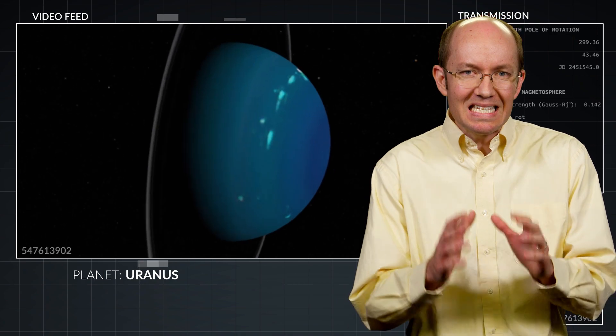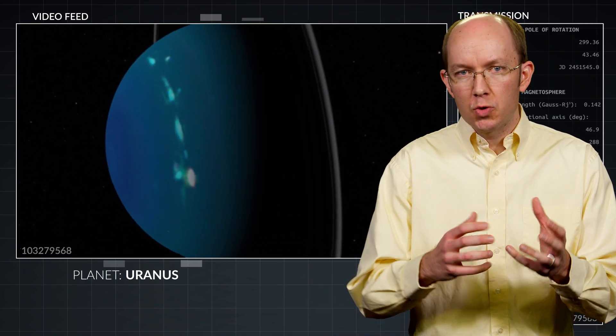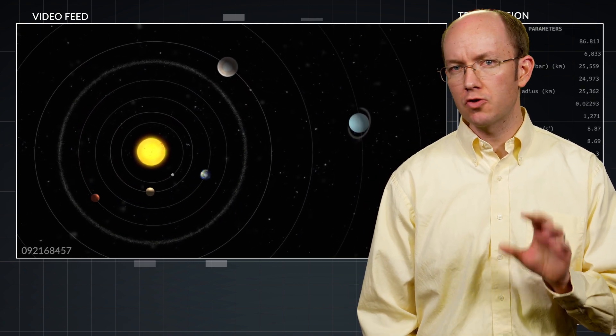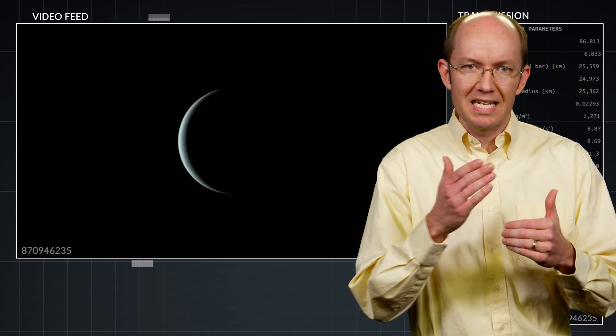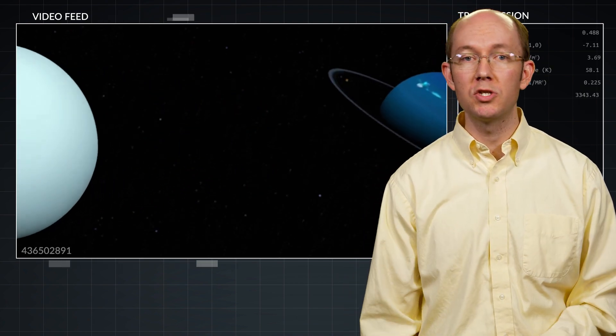Uranus became intensely studied over the next half century. Its orbital parameters were slowly calculated and refined. However, by the early 1800s, astronomers had already noticed that there were significant differences between the calculated and the observed locations of Uranus.